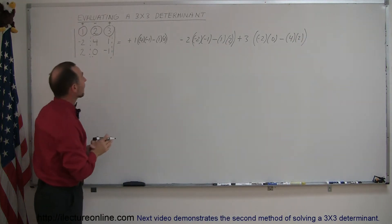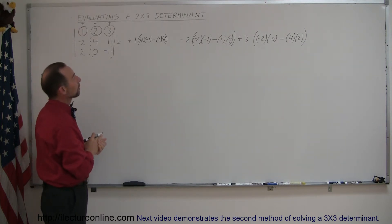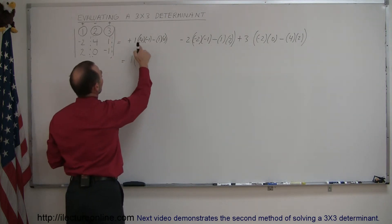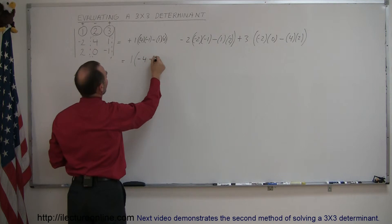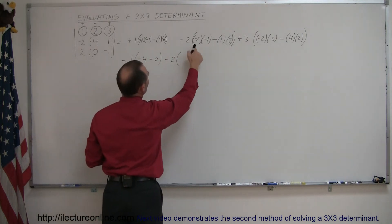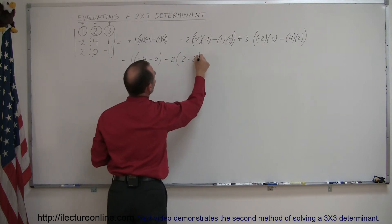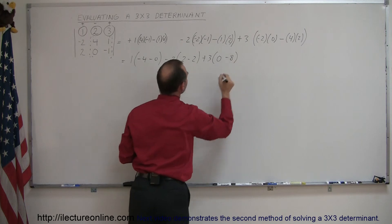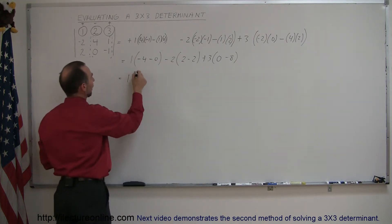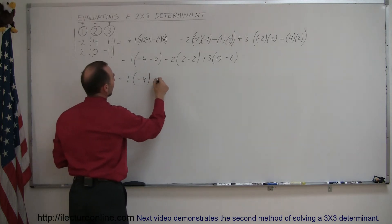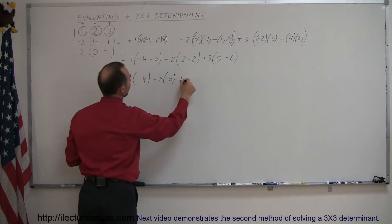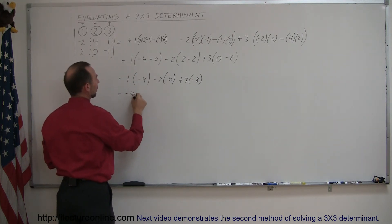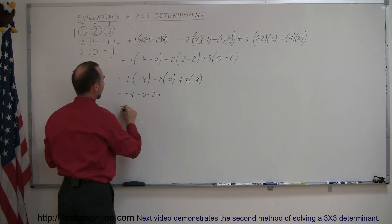Now if you evaluate that, you'll get the result of this 3x3 determinant. So this equals one times negative four minus zero, minus two times positive two minus two, plus three times zero minus eight. This simplifies to one times negative four, minus two times zero, plus three times negative eight. So this equals negative four, minus zero, minus twenty-four, which gives us negative twenty-eight.